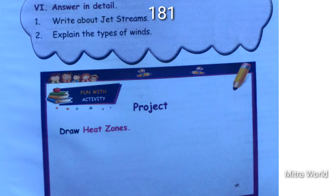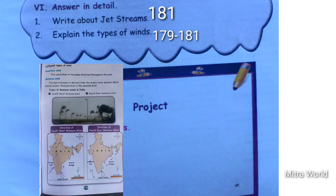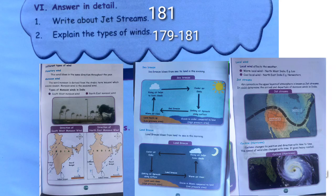Second detail question — explain the types of winds. Children, take page numbers 179 to 181. Different types of wind include: planetary wind, monsoon wind, sea breeze, land breeze, local winds, jet streams, and cyclones. Note from pages 179 and 181.